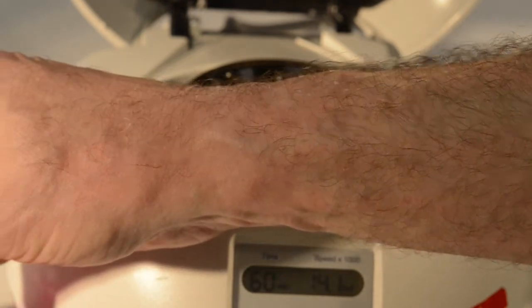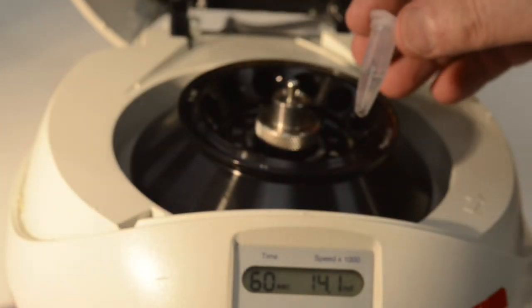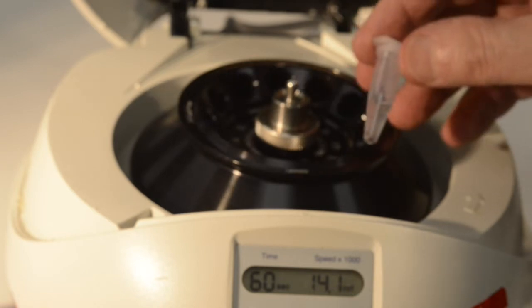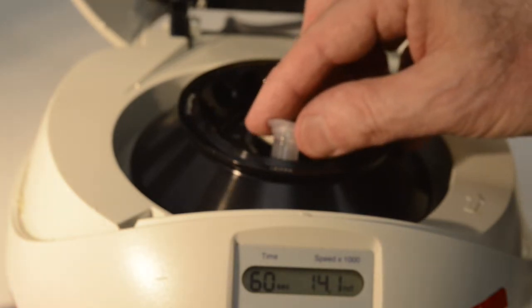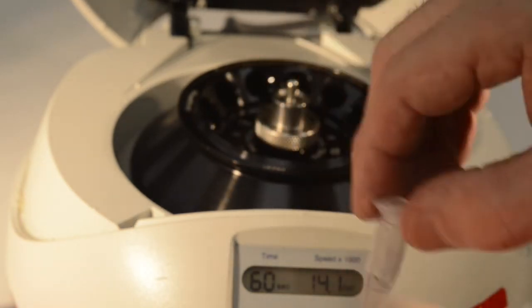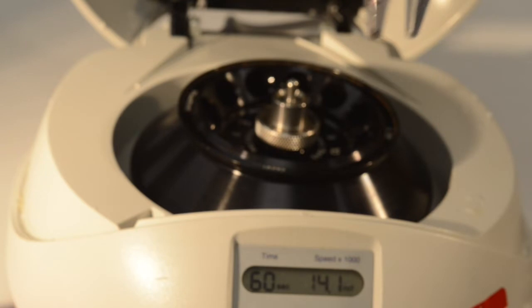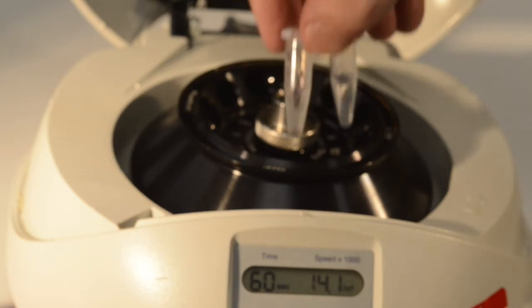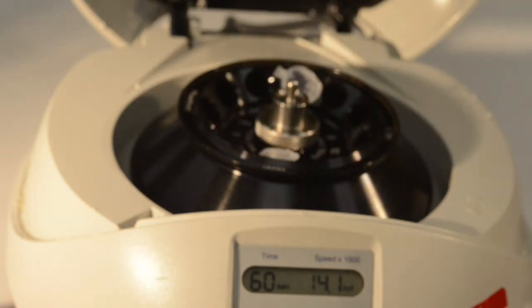This particular microfuge has a speed that you can set, but really the speed is not important. The idea here is simply to spin the microfuge tubes containing the ground-up beetles for a short period of time, five seconds, to pellet the large particles down to the bottom.